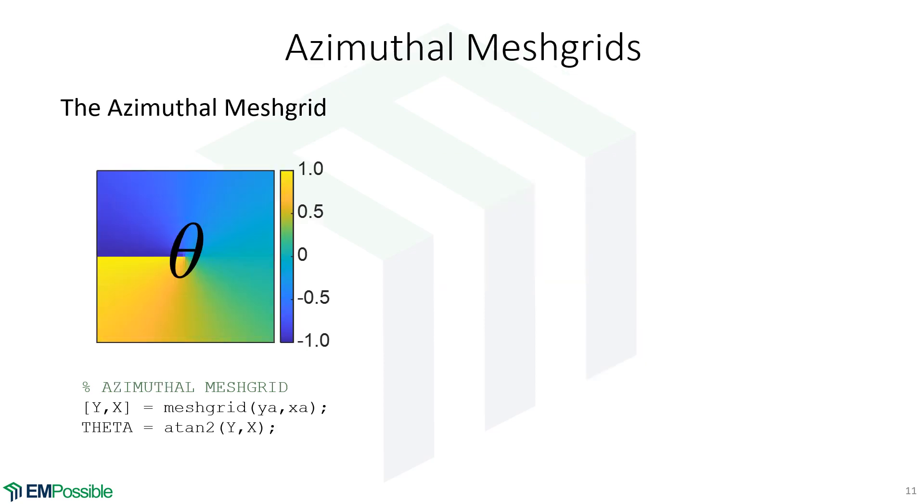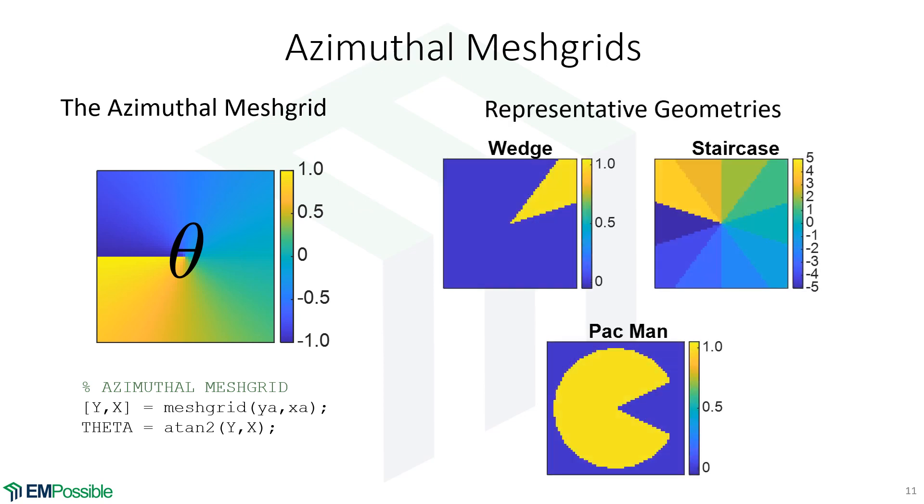The last one is an azimuthal meshgrid. Here we're calculating the inverse tangent of y and x - essentially the angle of the linear meshgrid x and y. Why would we want to do that? Perhaps we'd like to create wedges, staircase patterns, or even a Pac-Man. This is actually a combination of a radial grid and an azimuthal grid - we use the radial grid to make the circle, the azimuthal grid to make the wedge which is the mouth of the Pac-Man, and then subtract that wedge.